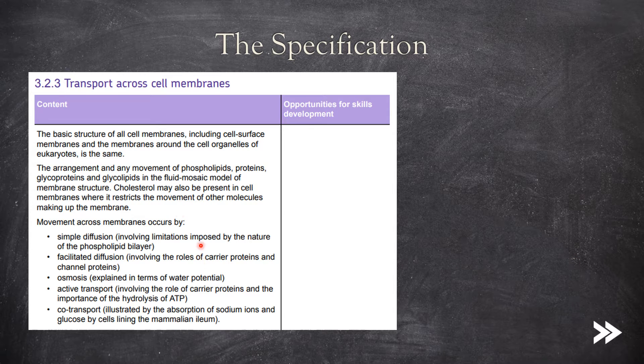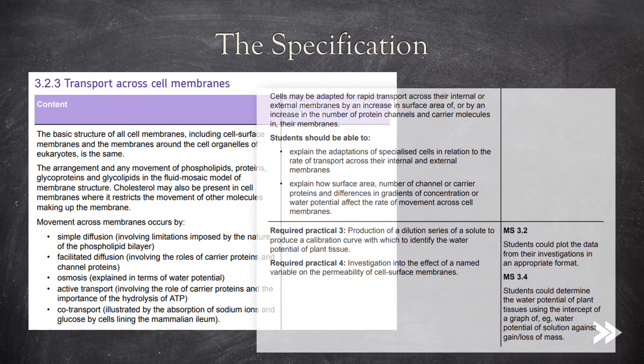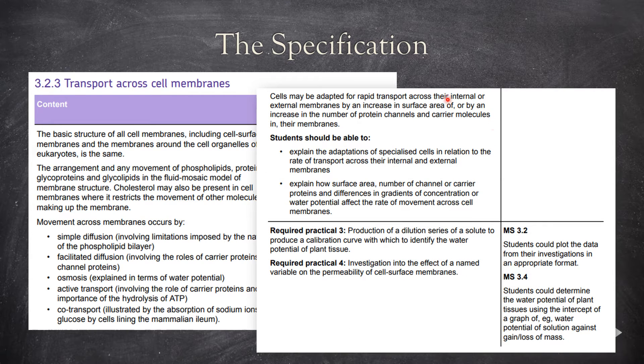Then we'll move on to how substances may move across cell membranes. There are five different ways listed in the specification. I've seen a five marker at the end of paper one on different ways substances may move across cell membranes, so make sure you know each of these in detail. And then finally, we'll look at some of the adaptations of cells that they have to increase the speed of transport across membranes.